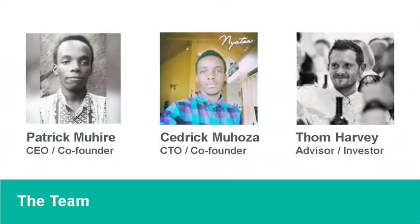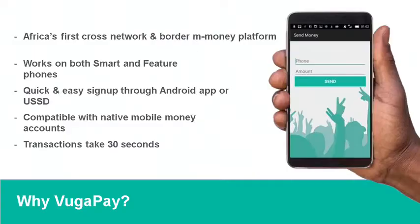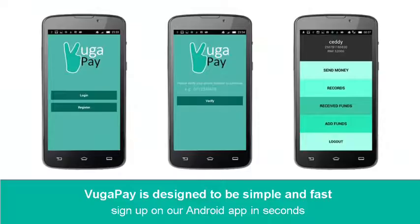We are here today to present to you VugaPay. VugaPay is a new payment gateway that allows cross-border and cross-network mobile money transfers at an affordable rate. VugaPay is not limited to network or region — it can work anywhere where there are mobile money services. You can download the app on Google Play Store, set your number connected to your mobile money account, and start using it.